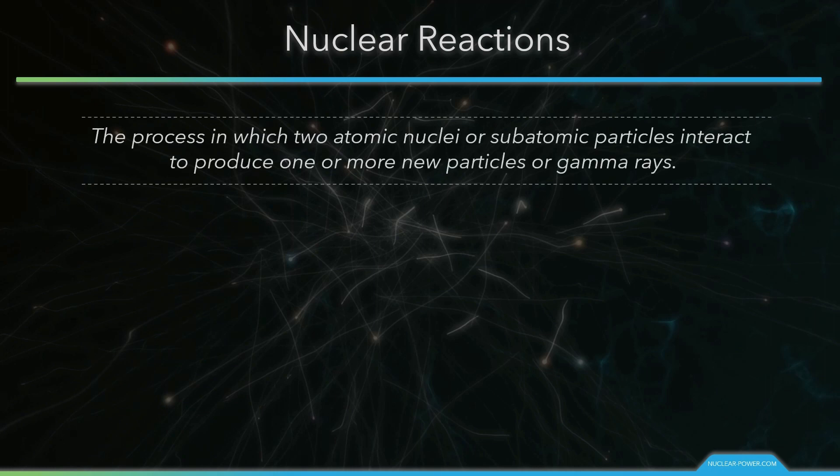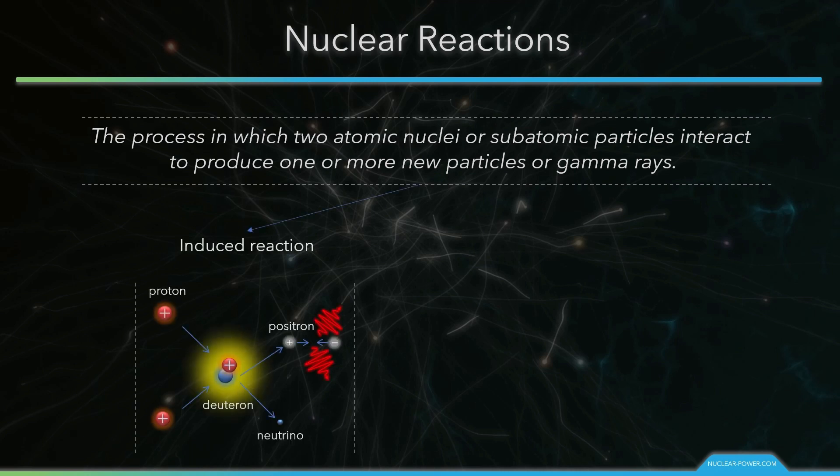A nuclear reaction is considered to be the process in which two atomic nuclei or subatomic particles interact to produce one or more new particles or gamma rays. A nuclear reaction must cause a transformation of at least one nuclide to another.